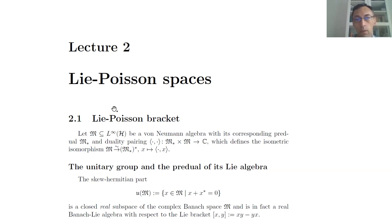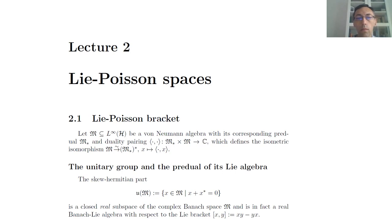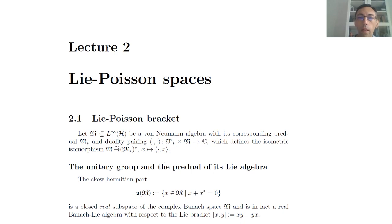Today we will take a look at the first type of geometric structure that arises in this setting, namely the structure of the Poisson space. Basically what we will do is show that the smooth functions on the self-adjoint part of the predual carry a Poisson bracket, exactly as in the case of the dual of any finite-dimensional algebra.